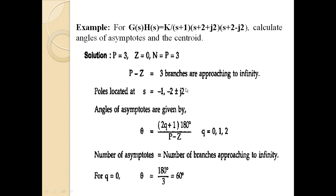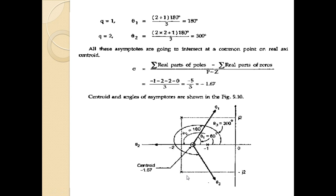To calculate the angle of asymptotes: theta = (2q+1) × 180° / (p−z), where q varies from 0 to (p−z−1) = 2. For q=0: theta = 180/3 = 60°. For q=1: theta = (2+1)×180/3 = 180°. For q=2: theta = 5×180/3 = 300°. All three asymptotes intersect at a common point on the real axis — the centroid.